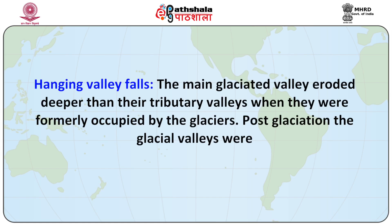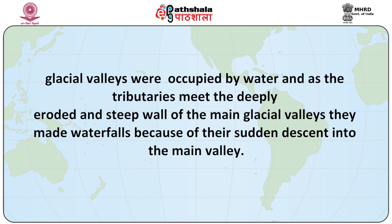Hanging valley falls: this is another category of waterfall. The main glaciated valley eroded deeper than their tributary valleys when they were formerly occupied by glaciers. Post-glaciation, the glacial valleys were occupied by water, and as the tributaries meet the deeply eroded and steep wall of the main glacial valley, they made waterfalls because of their sudden descent into the main valley. There are a lot of waterfalls present in the Scandinavian region. Yosemite Fall in California lies in this category. The stream exhibits a fall over the cliff into the Merced River valley, which was previously scoured and deepened by the glacier. This deep valley lies well below the valley of the tributary, thus giving rise to a hanging valley fall. Besides the classification of waterfalls on the basis of their mode of origin, there are numerous other types classified on the basis of their size, height and flow rate of water.